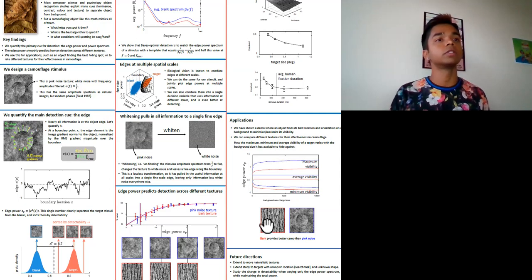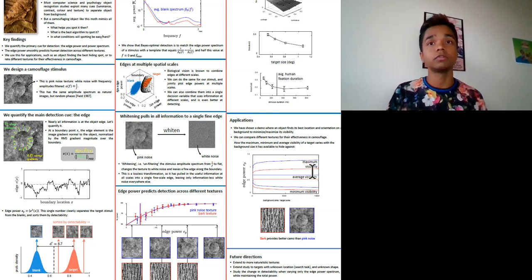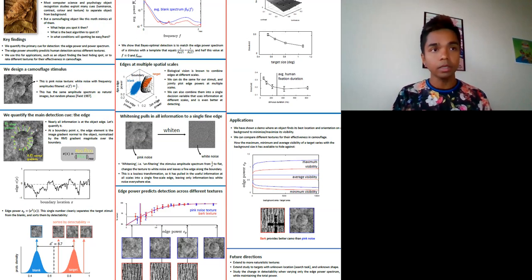We can also compare different textures for their effectiveness at camouflage. We see here, for example, that bark texture provides systematically better camouflage than the pink noise texture.